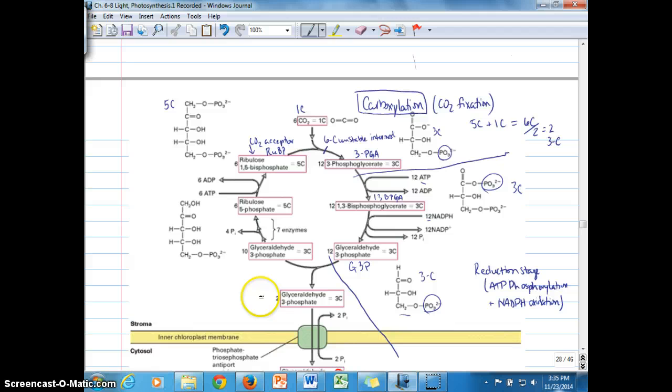Now we're at the last stage, the third stage of the Calvin cycle. We can see that G3P is the product of the reduction stage, and G3P is then going to enter the regeneration stage. This is the RUBP regeneration stage of the Calvin cycle.